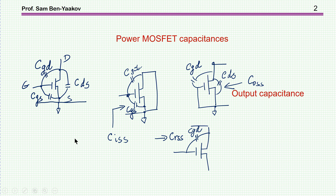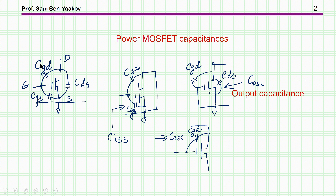Let me start off talking about the parasitic capacitances in a power MOSFET. Here is the drawing of the gate, drain, and source. We have capacitances inside the device between any two terminals — between gate and drain CGD, gate and source CGS, and drain and source CDS.